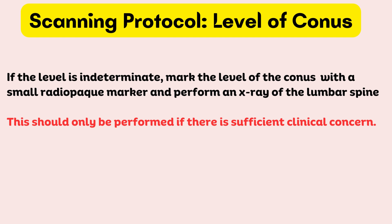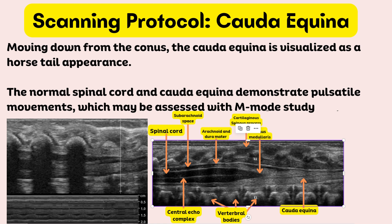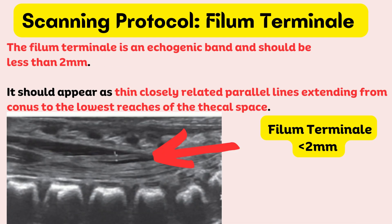A potential pitfall with the rib-counting method is that some people have 11 or 13 pairs of ribs, so both methods should be used to improve accuracy. If the level is indeterminate, mark the level of the conus with a small radiopaque marker and perform an x-ray of the lumbar spine — this should only be performed if there is sufficient clinical concern. Moving down from the conus, the cauda equina is visualized as a horsetail appearance. The normal spinal cord and cauda equina demonstrate pulsatile movements, which may be assessed with M-mode study. The filum terminale is an echogenic band and should be less than 2 mm, appearing as thin closely related parallel lines extending from the conus to the lowest reaches of the thecal space.